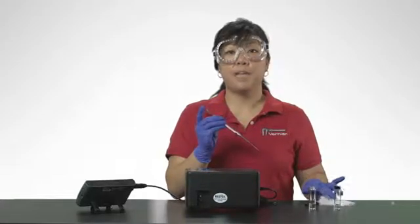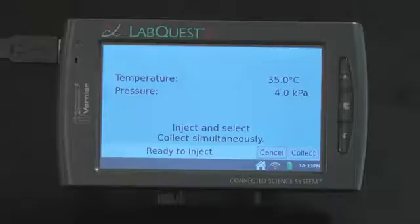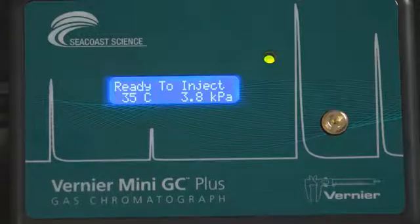When the Mini-GC Plus has reached the correct start temperature and pressure, the message reads inject and select collect simultaneously, and the LED on the Mini-GC Plus is green.